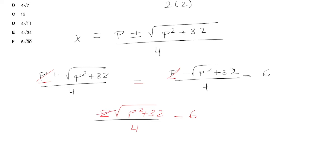Now 2 over 4, that's going to be a half. And then I'm going to multiply the 2 to the other side. So that's going to give me √(p² + 32) = 12. I'm going to square both sides and get p² + 32 = 144.